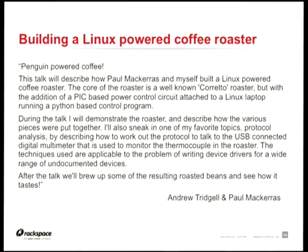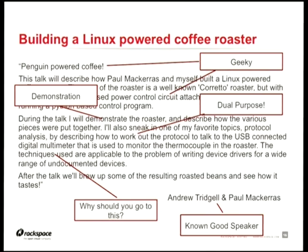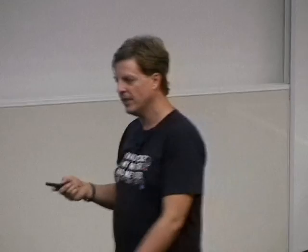Let's look at examples of good abstracts. The first is from Tridge — a canonical good speaker — about roasting coffee using Linux. He had a heat gun pointed at coffee rotating in a popcorn maker, controlling the heat supply via a multimeter connected over USB to his laptop. That's pretty geeky — and it passes the geeky test. But it's also a dual-purpose talk: he showed how to write a device driver for an unknown device using USB protocol sniffing in real time.